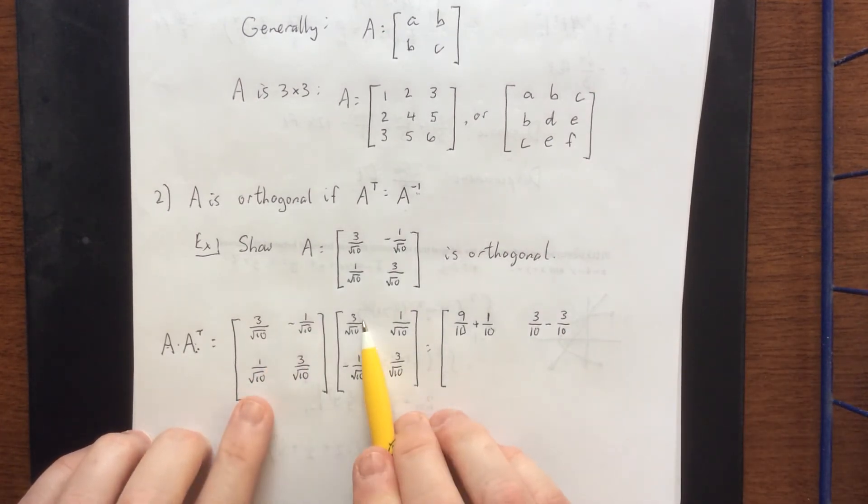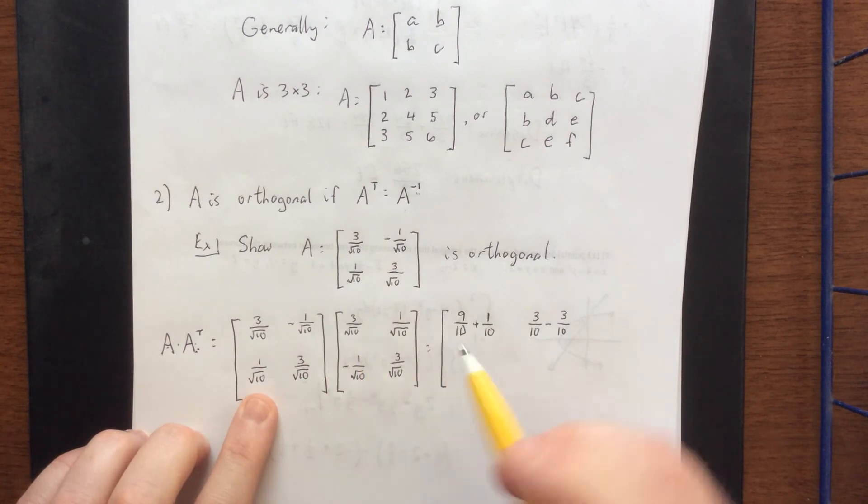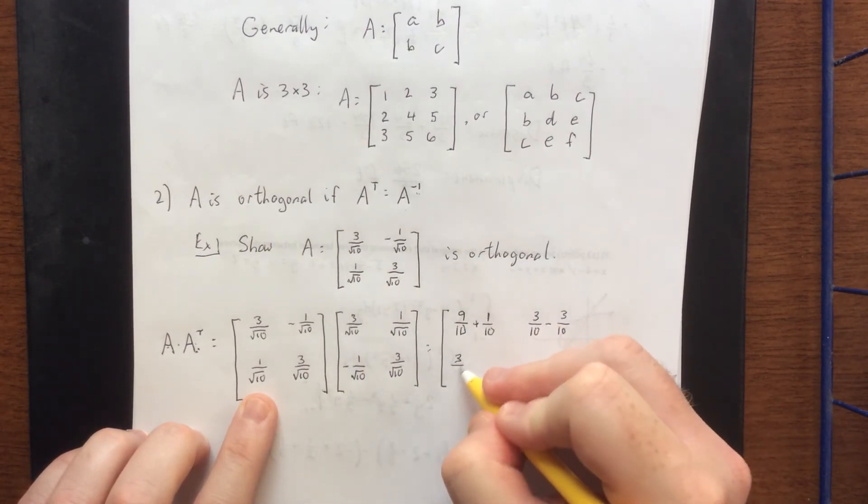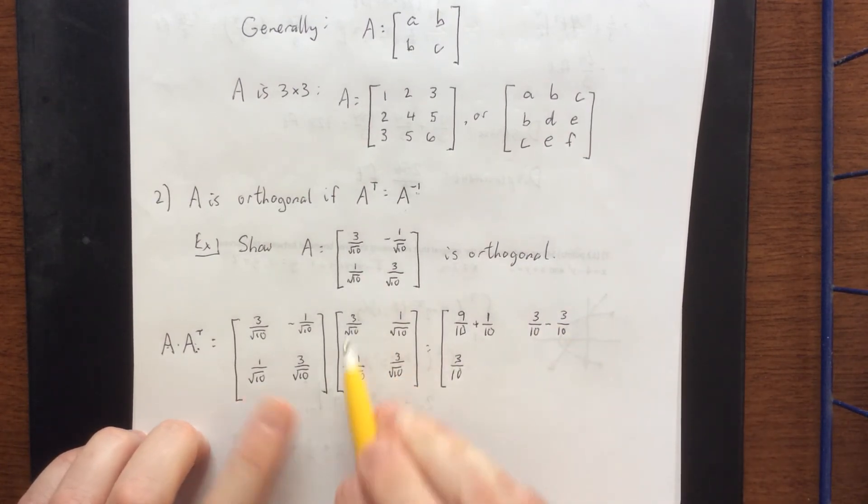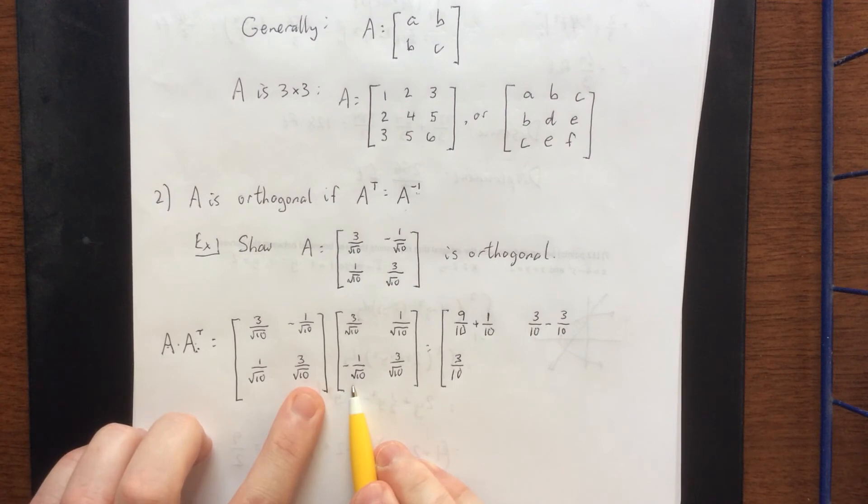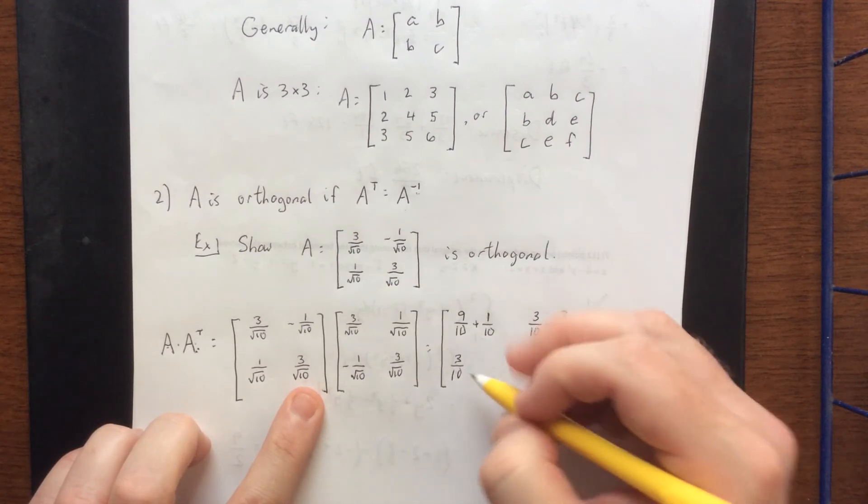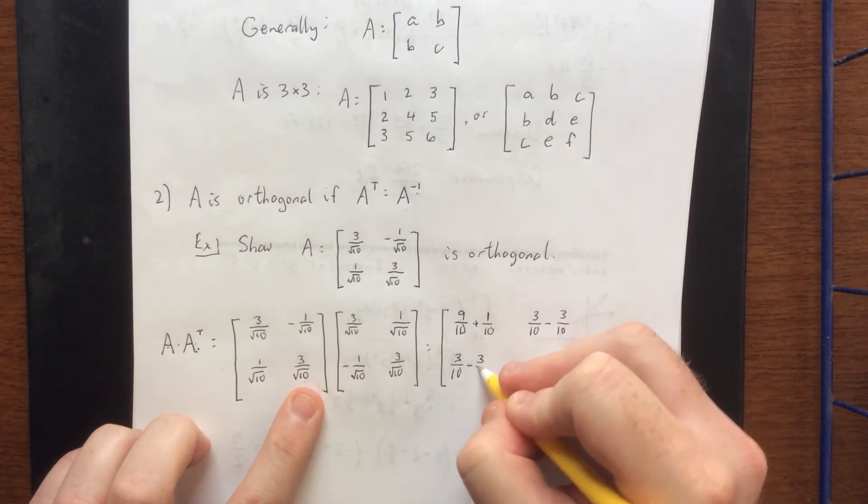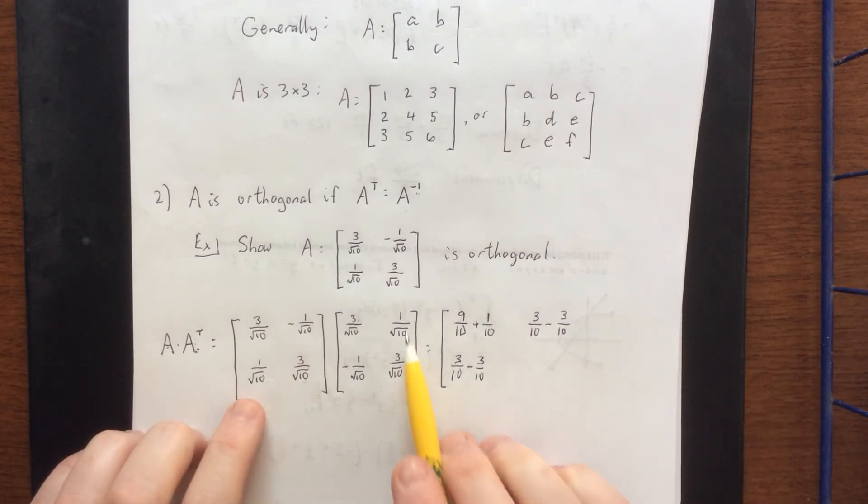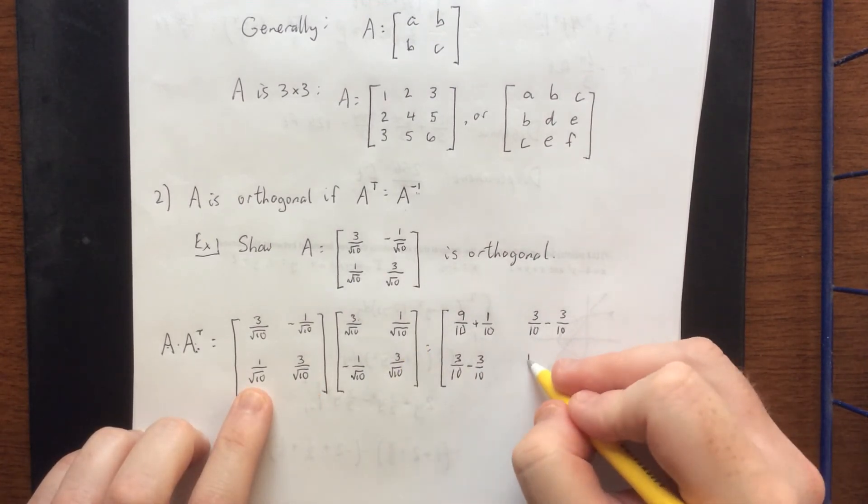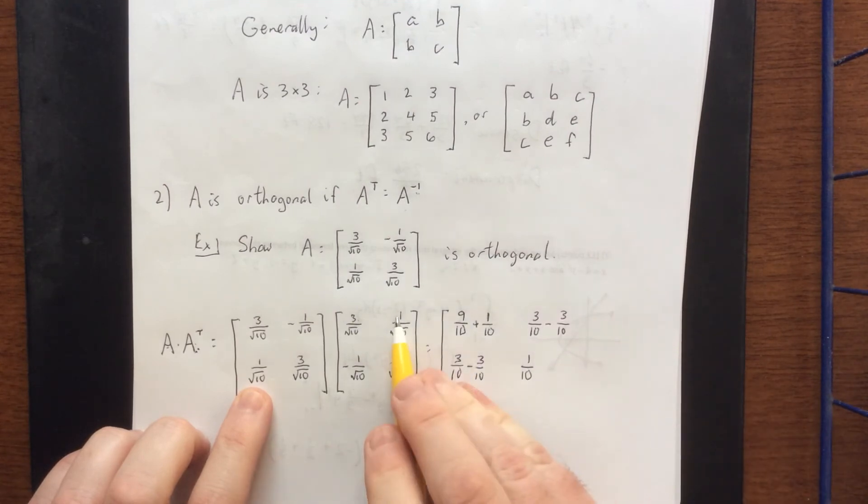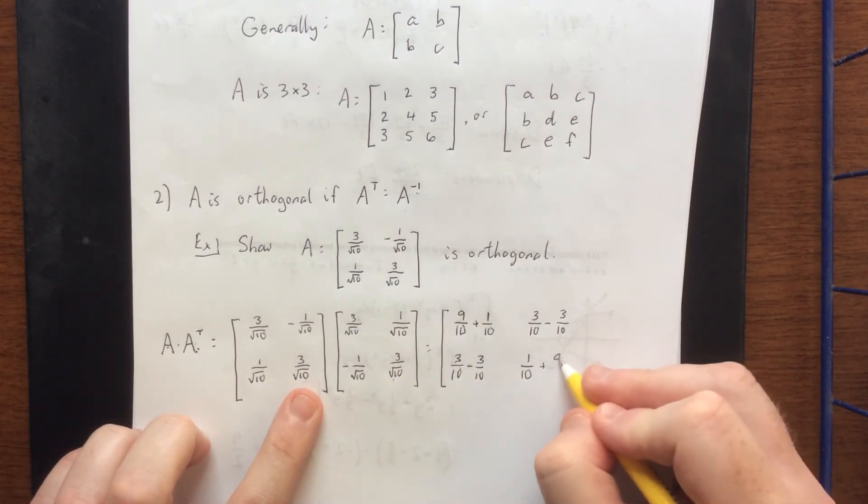For the 2, 1 entry, 1 over the square root of 10 times 3 over the square root of 10, that'll be 3 tenths, and 3 over the square root of 10 times negative 1 over the square root of 10 will be minus 3 tenths. And finally 1 over the square root of 10 times 1 over the square root of 10, that'll be 1 tenth, and 3 over the square root of 10 times 3 over the square root of 10 will be 9 tenths.